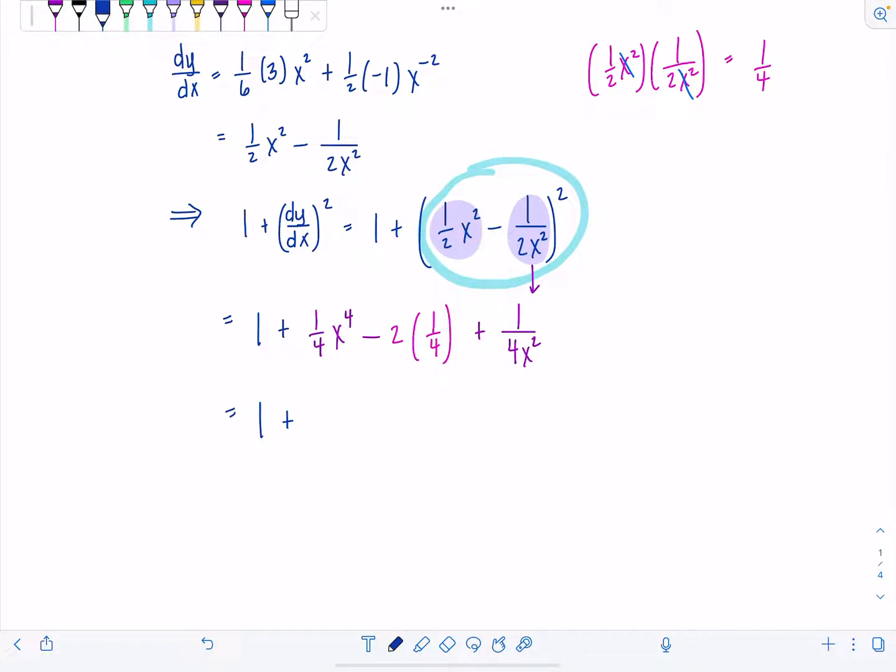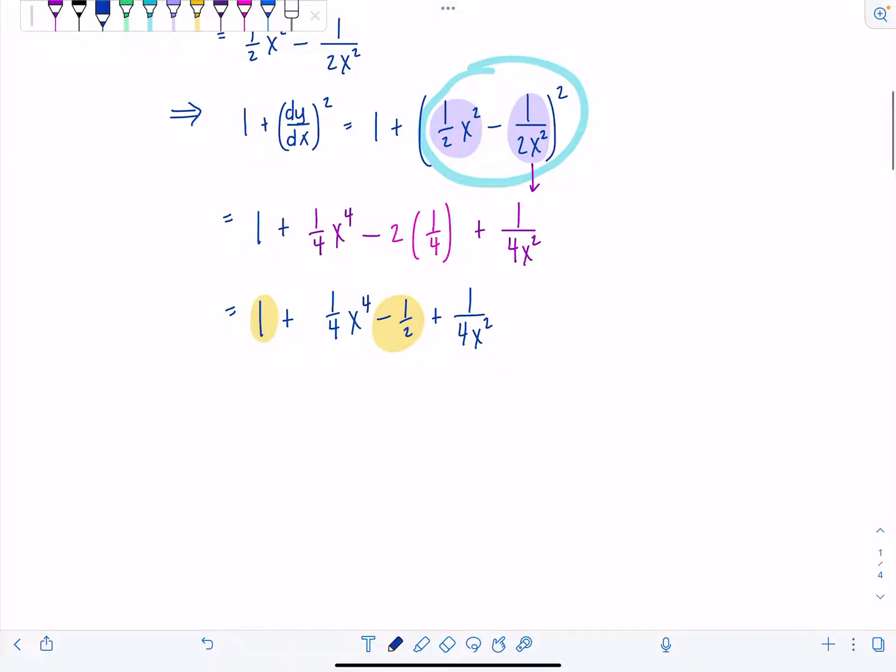So let's see what's going on here. I've got one plus one fourth x to the fourth minus a half plus one over four x squared. If you're given a problem in this little form, it'll always work out so that you have a negative one half in the middle. And then you can combine that with the one and you have a positive one half. And I'm actually going to put the positive one half in the middle. So we've got one fourth x to the fourth plus one half plus one over four x squared.